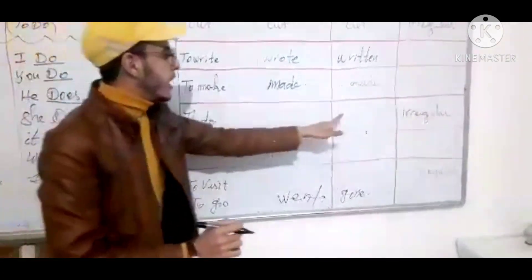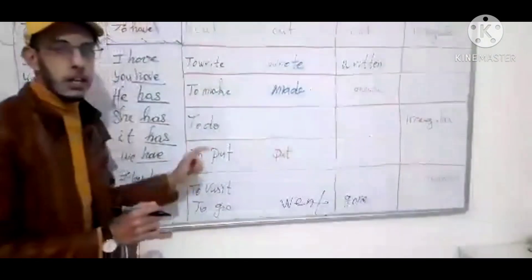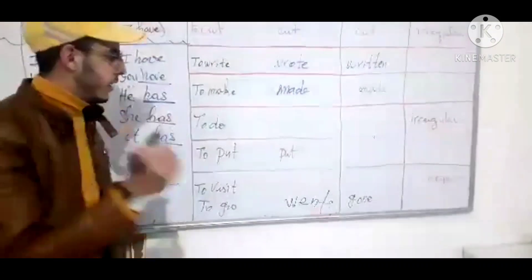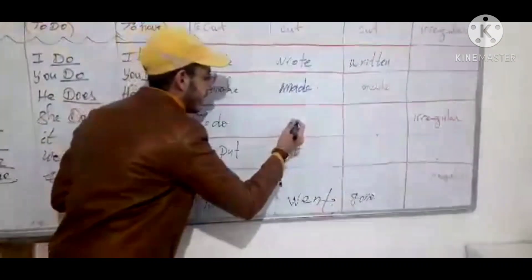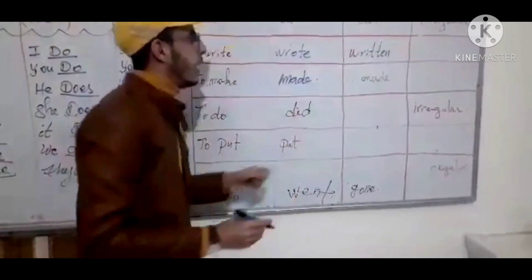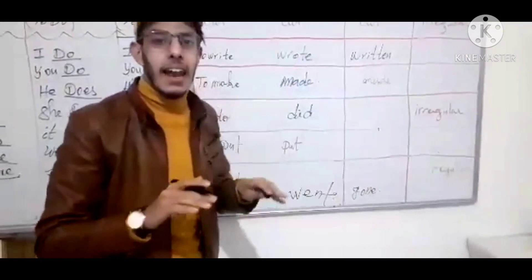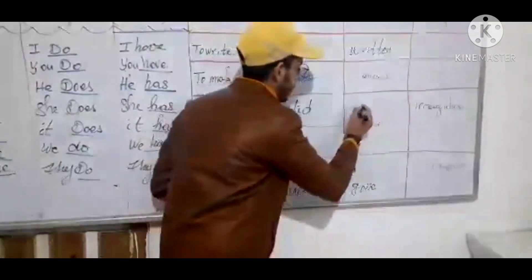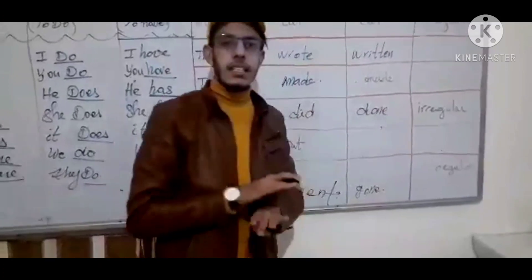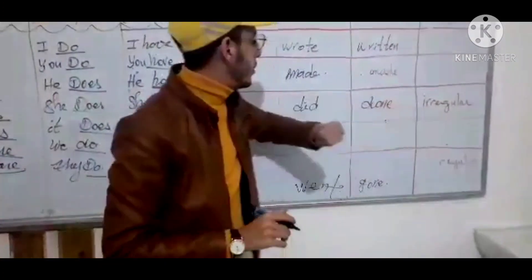The verb 'to do': I do now, I did in the past. I did that. The past participle is 'done' — like we say, 'what's done is done.' It's an irregular verb.